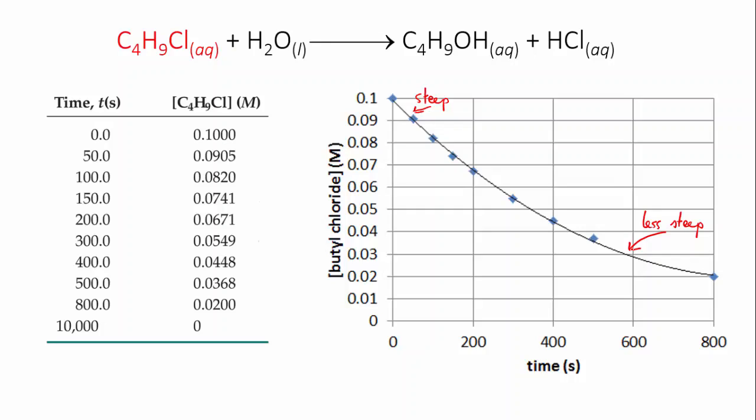Alright so how do we calculate the rate? Well it's still rise over run. But because this graph is a curve the gradient is always changing. So we're going to need to choose a time interval and then calculate the average rate for that time interval.